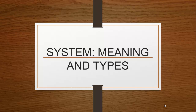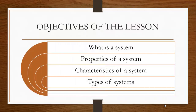Today we are going to be looking at the meaning of a system and the types of system. Before we proceed, let's look at the objectives for this lesson. We should be able to know what a system is, explain what a system is, know the properties of a system, explain the characteristics of a system, and give the different types of system.